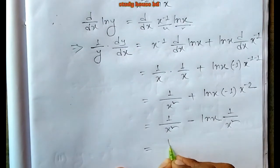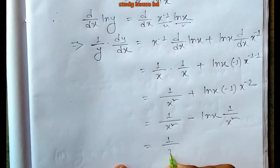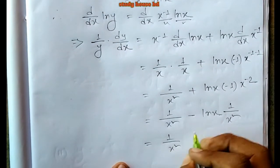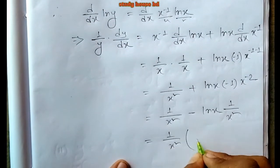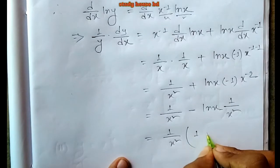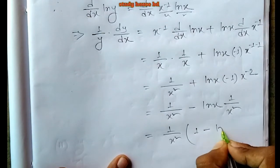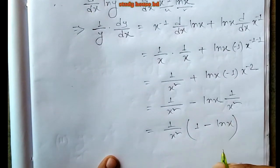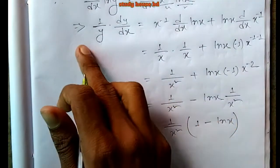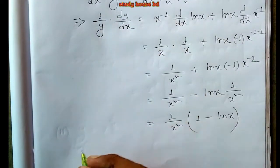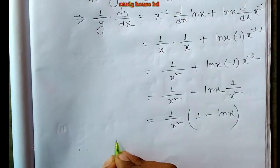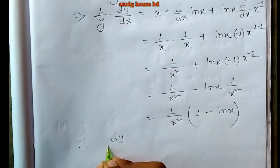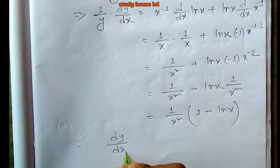Taking 1/x squared common, we get (1/x squared) times (1 minus ln x). Then multiplying both sides by y, we get dy/dx equals y times (1 minus ln x) over x squared.